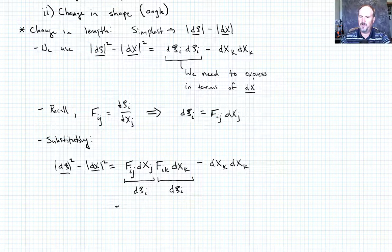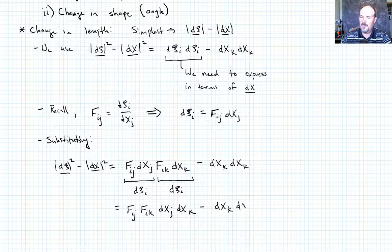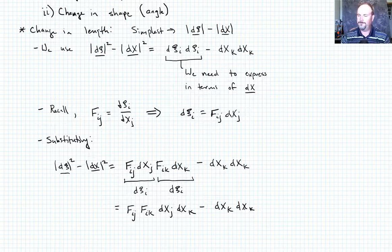So let me just go ahead and rearrange this. I'm going to move the DX_j and DX_k to the right-hand side of that term, and write this as F_ij F_ik and then DX_j DX_k minus DX_k DX_k. Okay, so what do we want to do now? And I'm working this through in gory detail in part, so you can kind of see how we manipulate tensors in sort of an algebraic fashion.